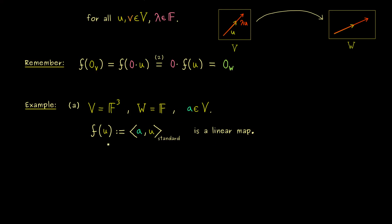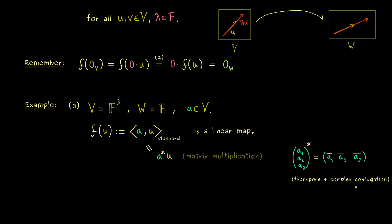Since this is the standard inner product in F³ we can also write it as a matrix multiplication. In particular we have a-star as a row vector multiplied by the column vector u. For real vector spaces, the star denotes the transpose operation; for complex vector spaces, it also includes complex conjugation of each entry. So the standard inner product has a short notation using matrix multiplication, and this tells us that the linear map f is completely determined by this matrix. So we immediately see: linear maps and matrices are related.